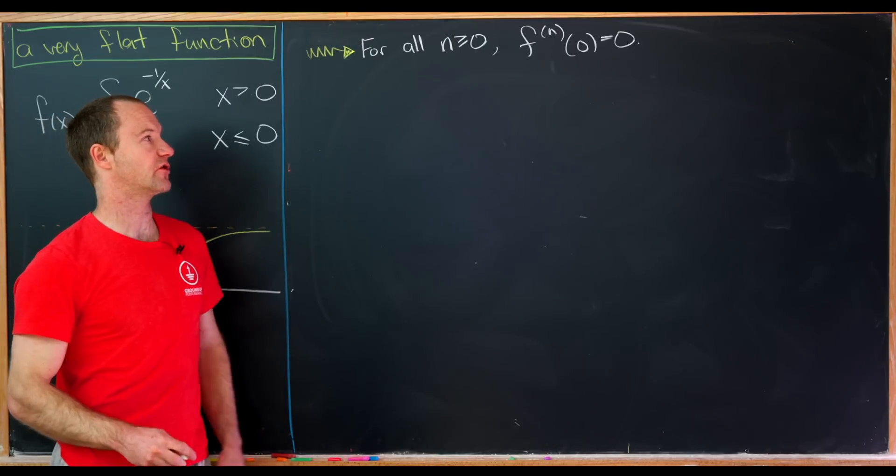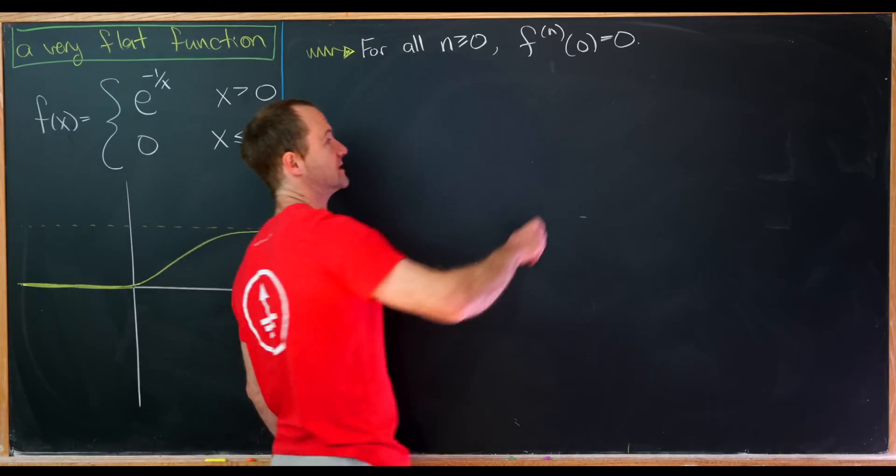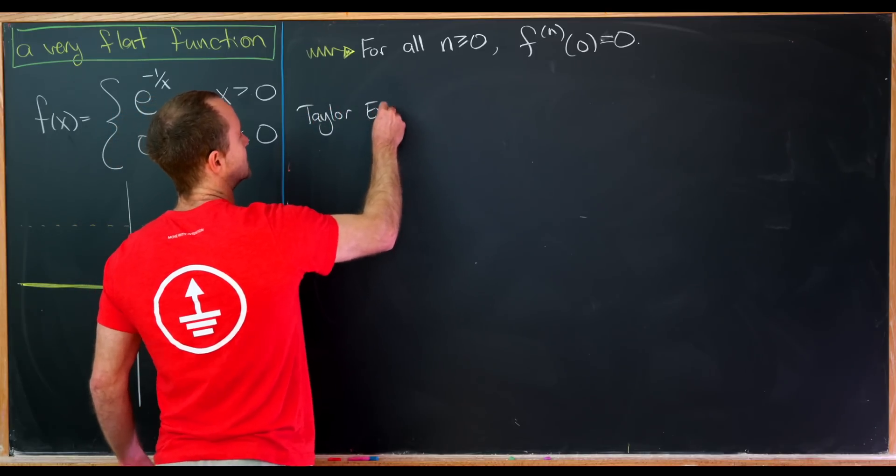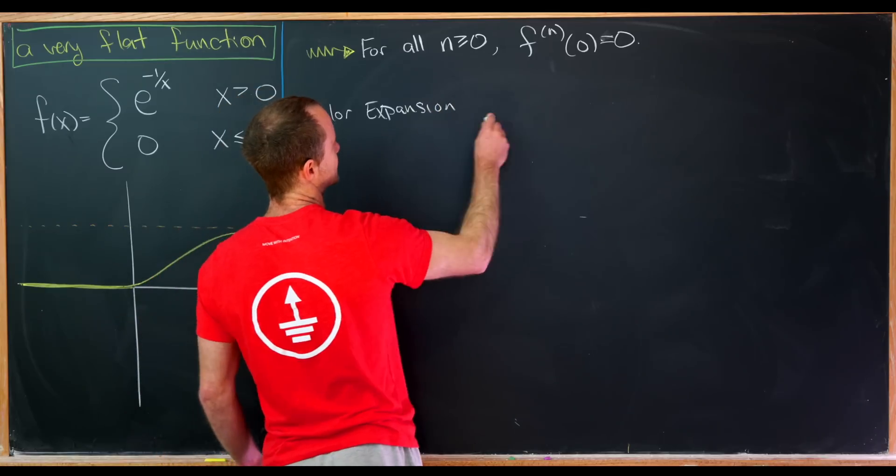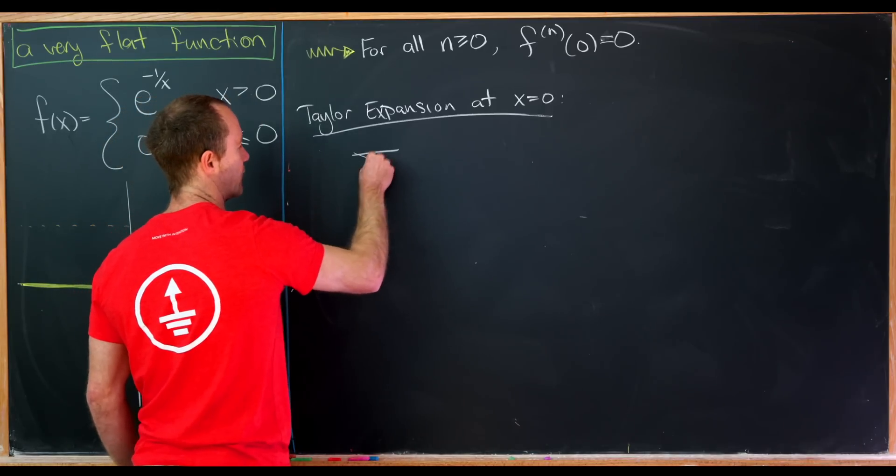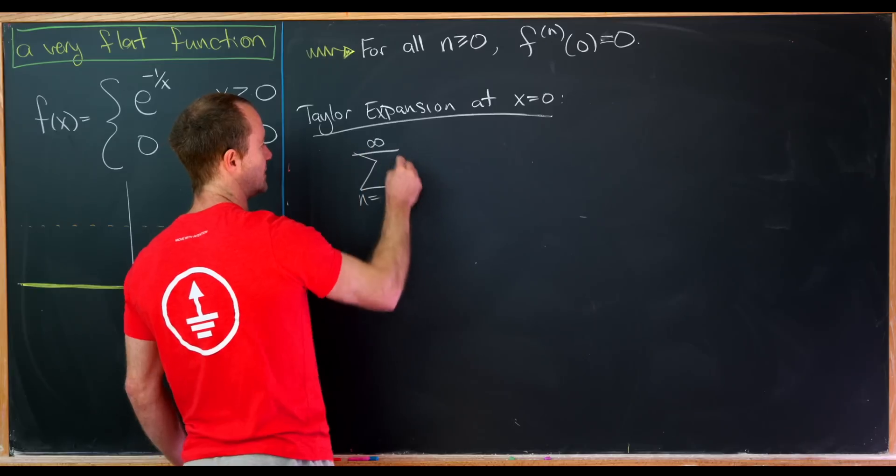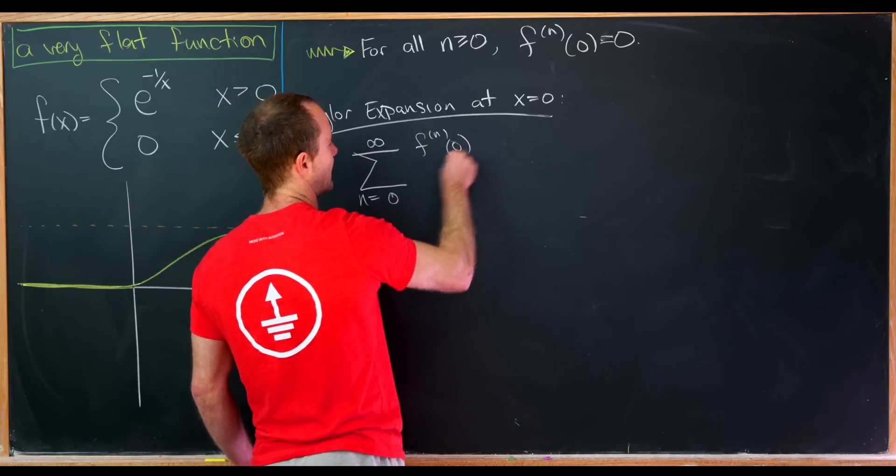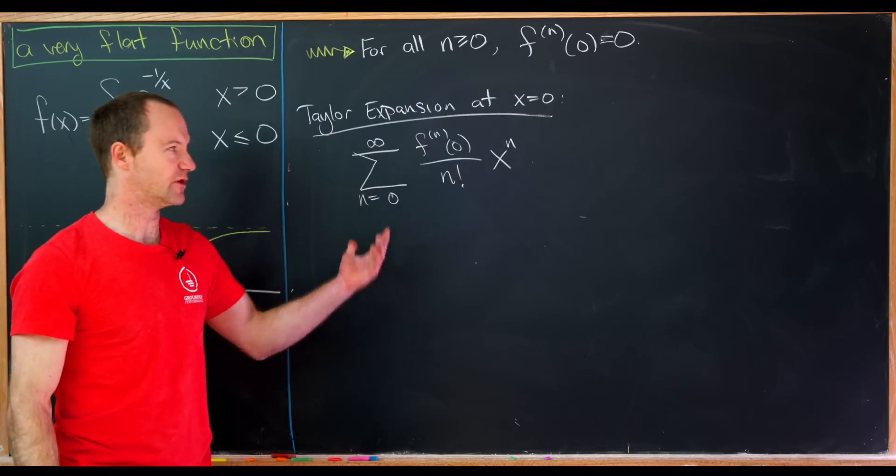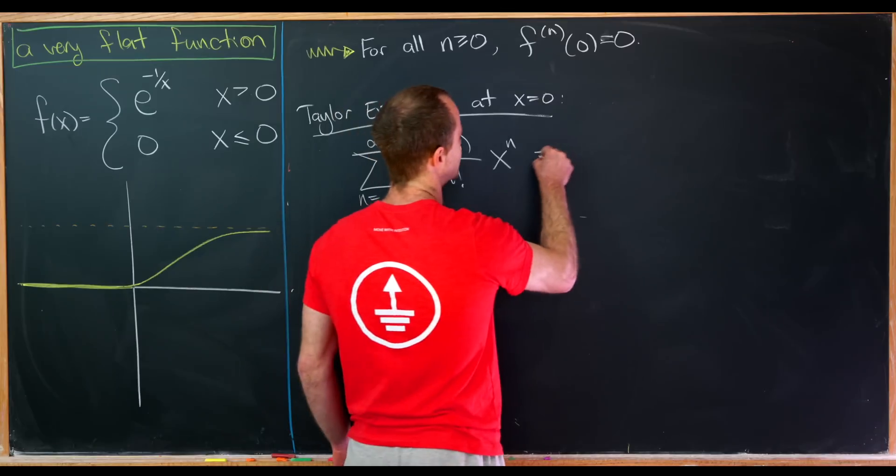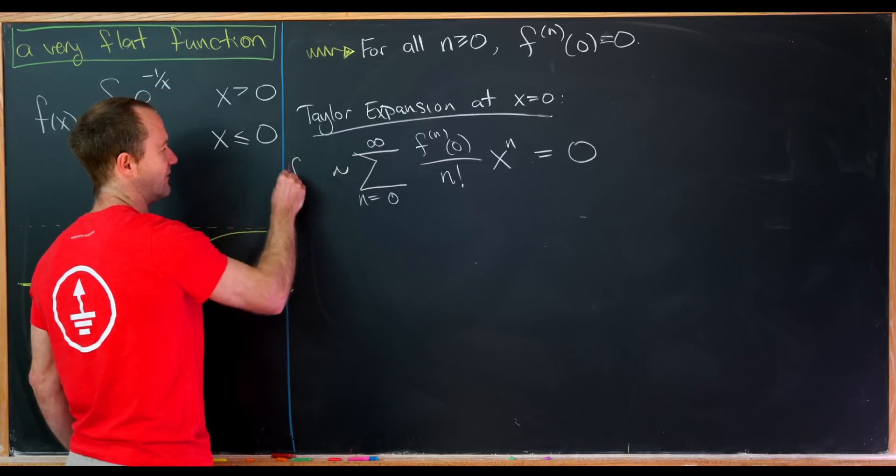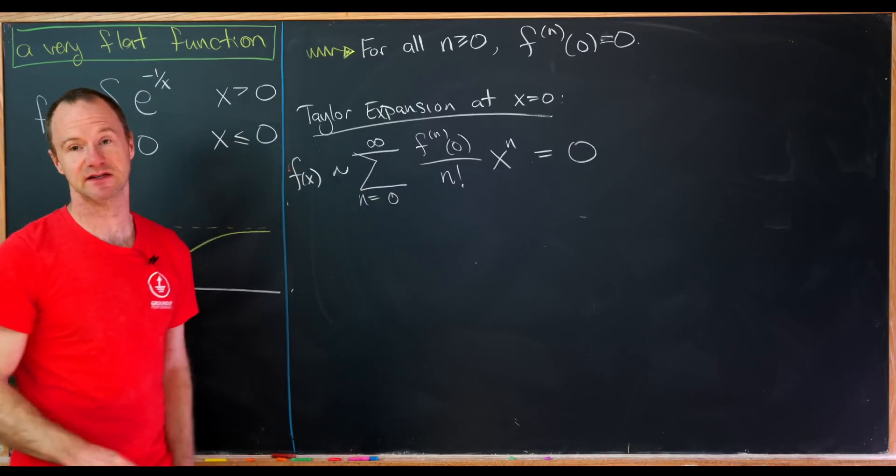So we just showed for all n bigger than or equal to 0, the nth derivative of f evaluated at 0 was 0. But now let's do a Taylor expansion based at 0. So that's sometimes called a McLaurin expansion. So Taylor expansion at, like I said, x equals 0. So let's recall that that will have the following formula. So we'll have the sum as n goes from 0 to infinity of the nth derivative of f evaluated at 0 over n factorial times x to the n. But notice, since all of those are equal to 0, this will just be a bunch of 0s added to each other. So this gives us 0. Now, I'm not going to say this is f of x, but this is maybe twiddle f of x. So in other words, f of x is kind of like this near x equals 0.